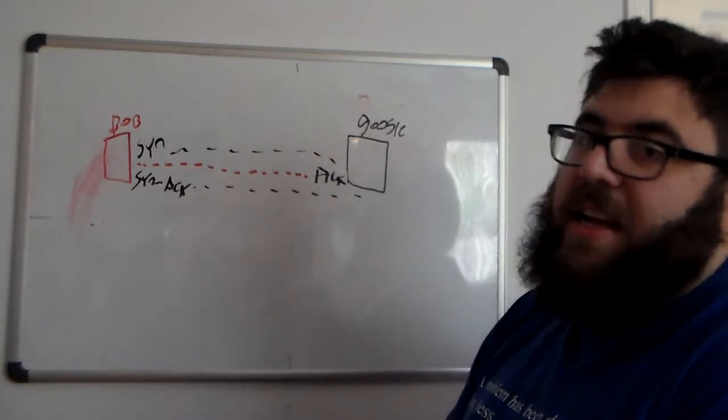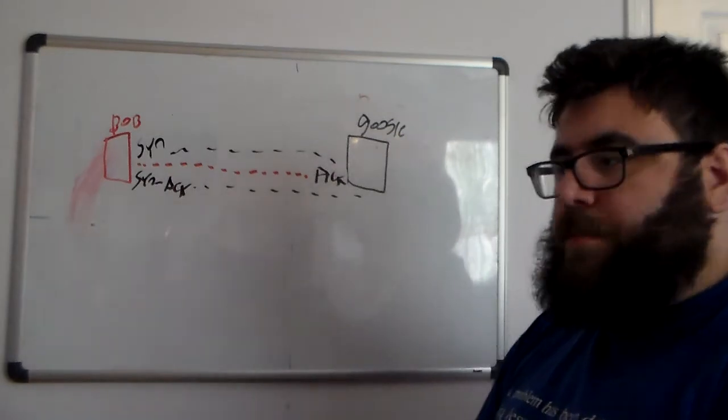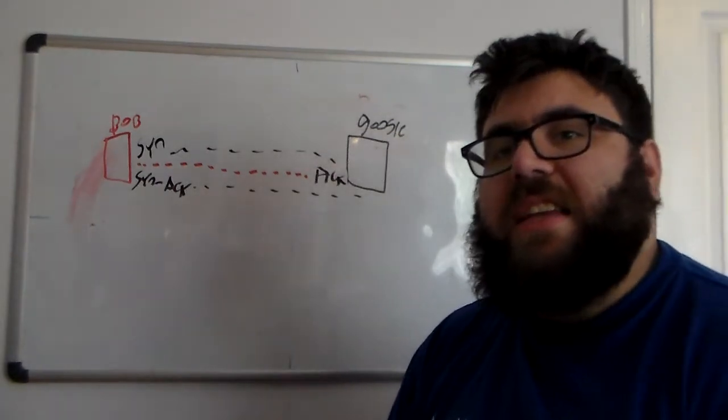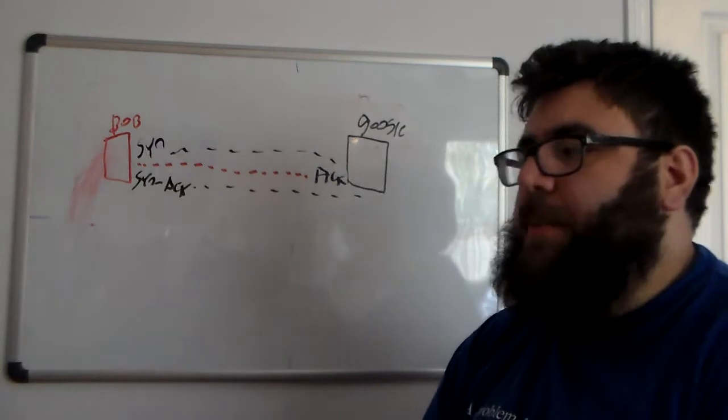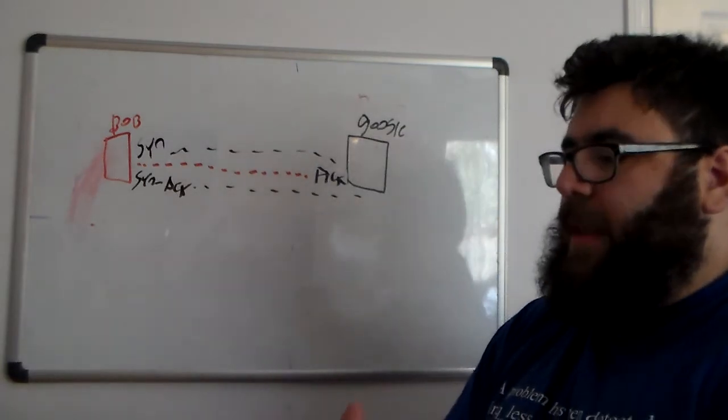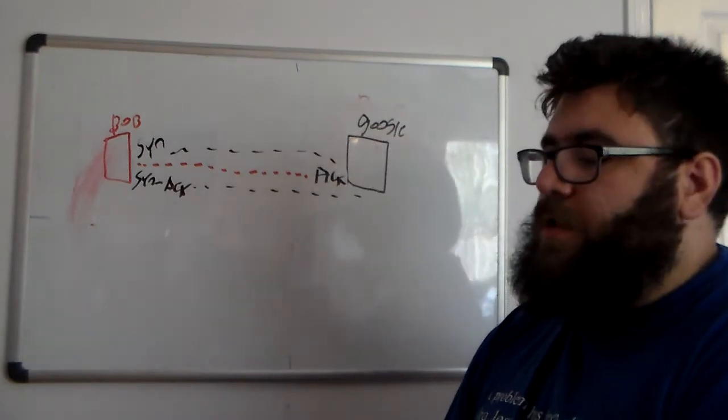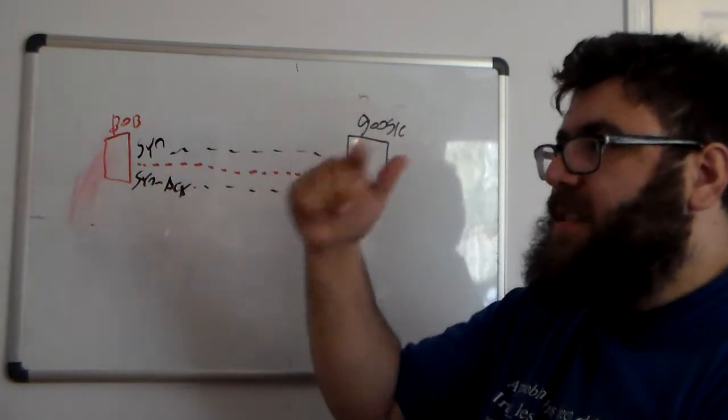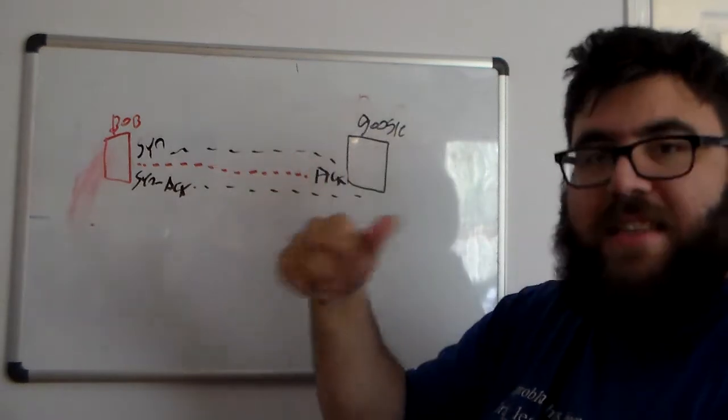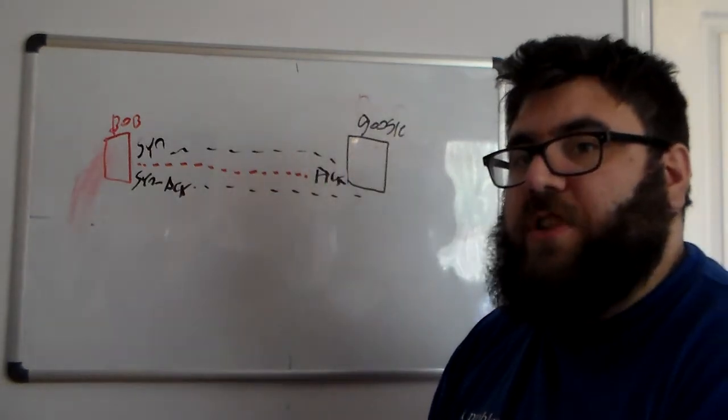SIN ACK, SIN ACK. Now you can see this in Wireshark. For example, if you go capture Wireshark, then start your capture, go to any website, you'll see SIN, SIN ACK. Sorry, SIN ACK, SIN ACK. It's a three-way handshake.